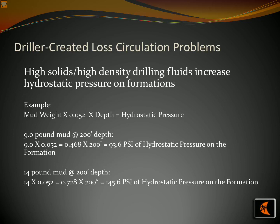High solids and high-density drilling fluids can significantly increase the hydrostatic pressure on formations. For example, a mud with a weight of 9.0 pounds per gallon used at a depth of 200 feet results in a hydrostatic pressure calculated by multiplying the mud weight by 0.052 and then by the depth: 9.0 × 0.052 × 200 feet equals 93.6 psi of hydrostatic pressure on the formation. The same calculation with a mud weight of 14 pounds would result in a hydrostatic pressure of 145.6 psi, which can cause drilling losses.